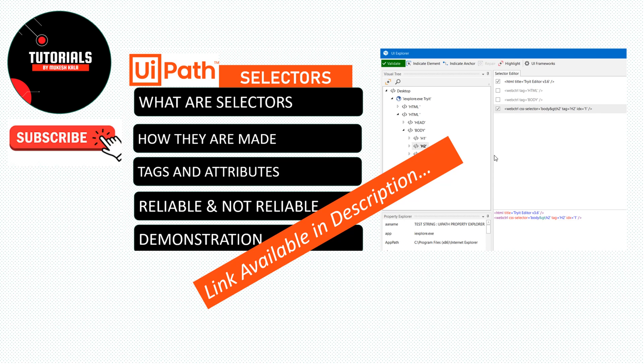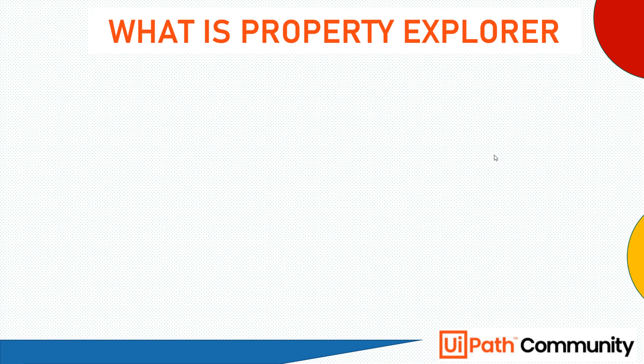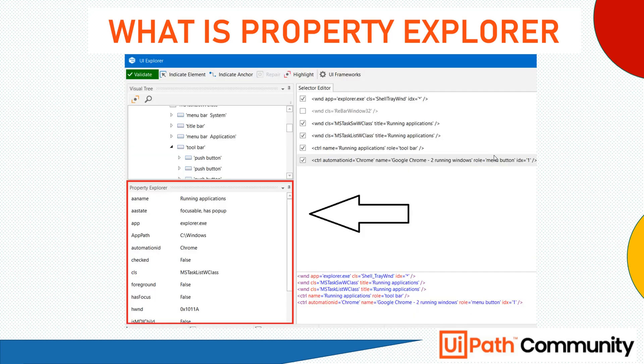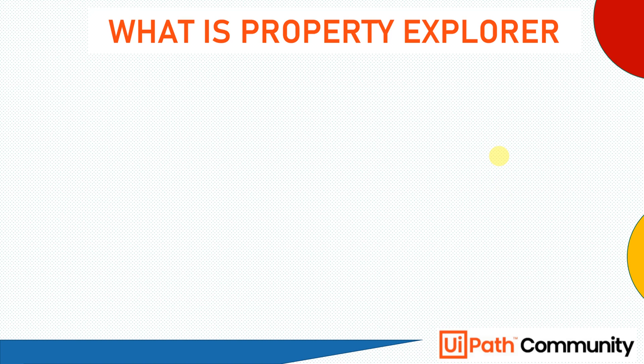In case you haven't already subscribed to the channel, please do subscribe. Now let us see the agenda for this video. We are going to discuss the Property Explorer — the panel highlighted in red, located in the UI Explorer. Today we are going to see what the scenarios and usage of the Property Explorer are with UiPath Studio.